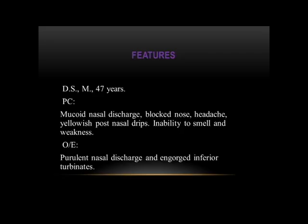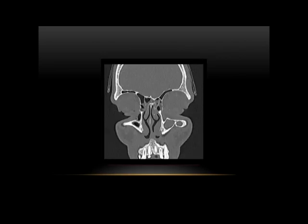DS is a 47-year-old who complained of purulent nasal discharge, headache, inability to smell, and weakness. Examination revealed purulent nasal discharge with engorged turbinates. This is the CT scan — you can see opacification and an isodense lesion, with the next showing the macularis sign.